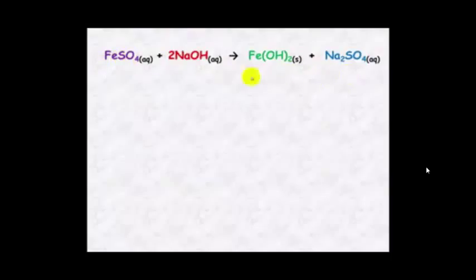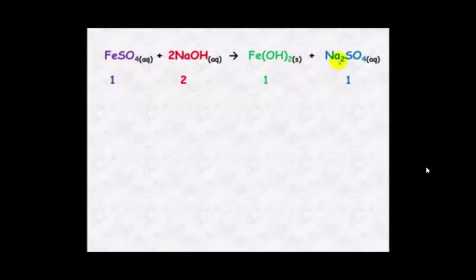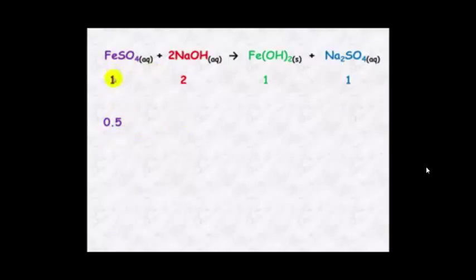Here's a balanced chemical equation. We can see that one mole of iron sulfate reacts with two moles of sodium hydroxide to form one mole of iron hydroxide and one mole of sodium sulfate. It will always react in these ratios. So if we have 0.5 moles of iron sulfate, we know we need to react that with double the amount — a one to two ratio — so one mole of sodium hydroxide.